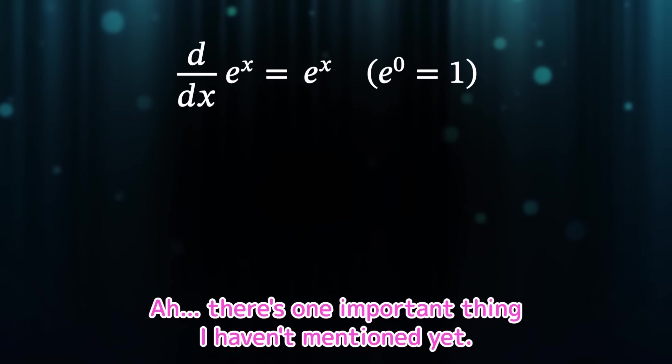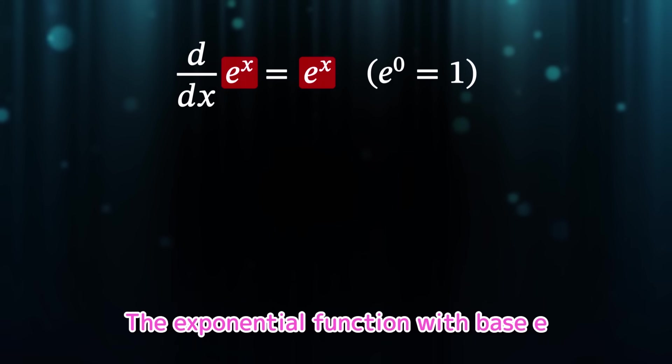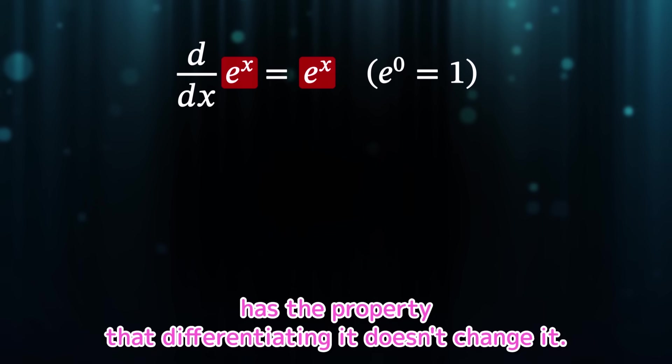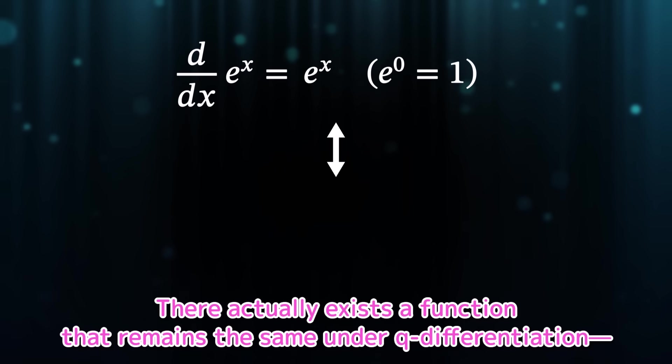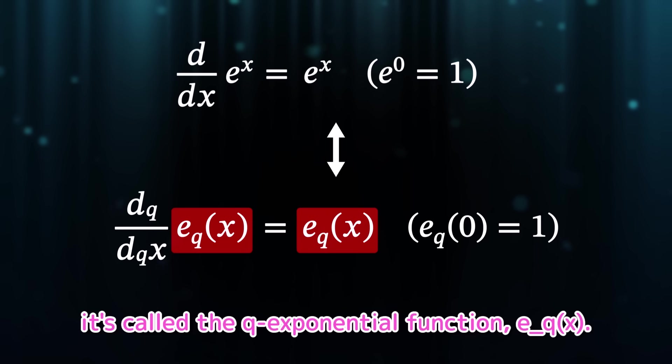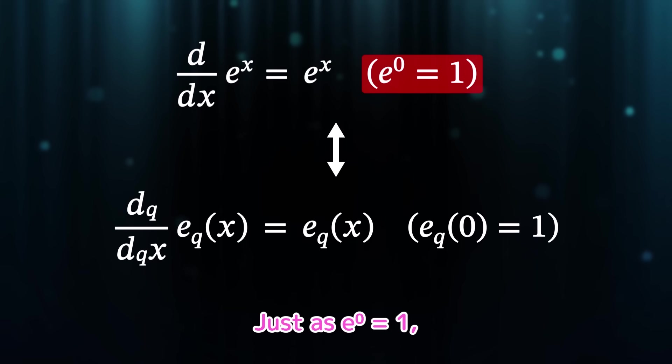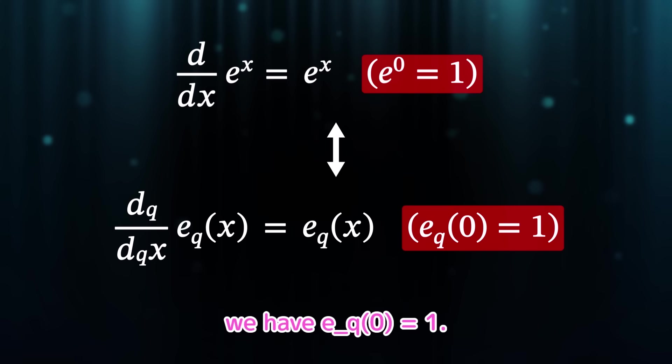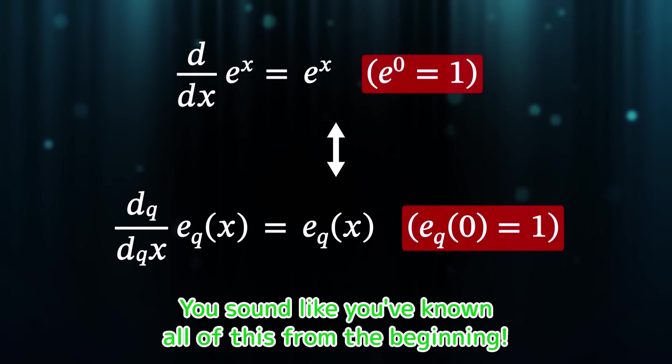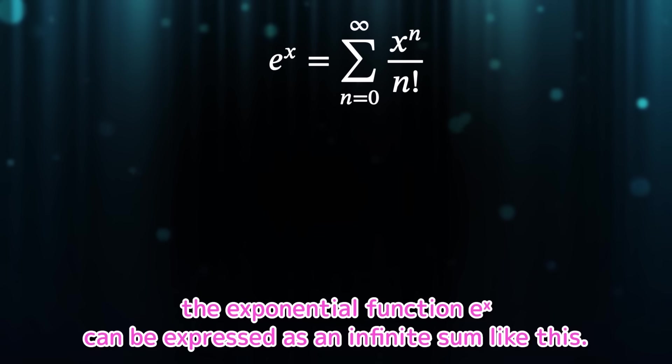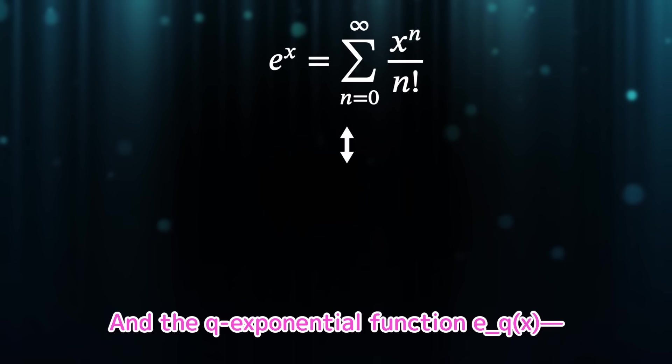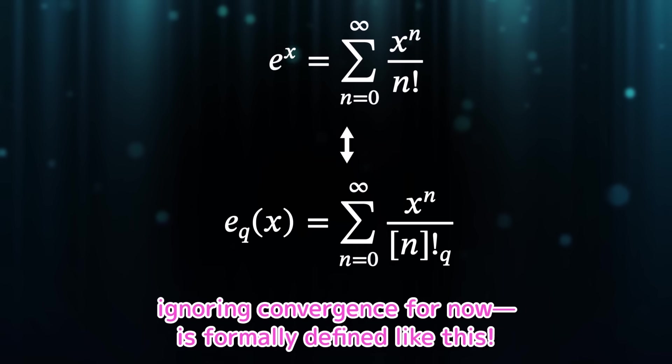Bah! There's one important thing I haven't mentioned yet. The exponential function with base e has the property that differentiating it doesn't change it. Right! So, what about in the case of the q derivative? There actually exists a function that remains the same under q differentiation. It's called the q exponential function, eq of x. Just as e to the power of 0 equals 1, we have eq of 0 equals 1. You sound like you've known all this from the beginning! A full explanation would take a while, so I'll just mention it briefly. The exponential function e to the x can be expressed as an infinite sum like this. And the q exponential function eq of x, ignoring convergence for now, is formally defined like this.